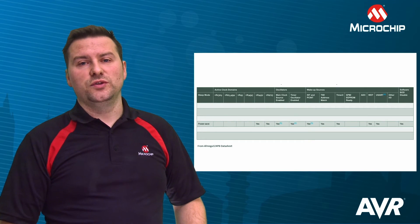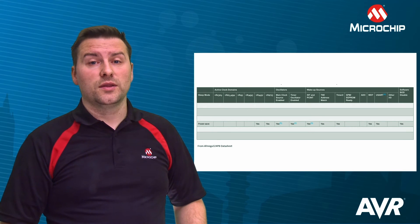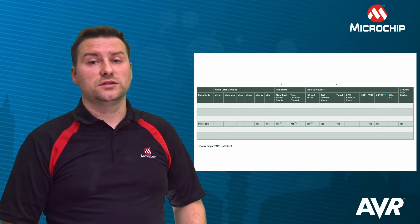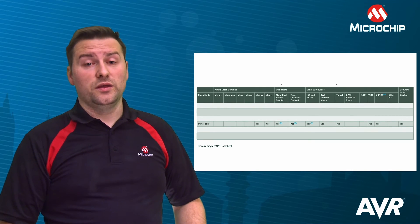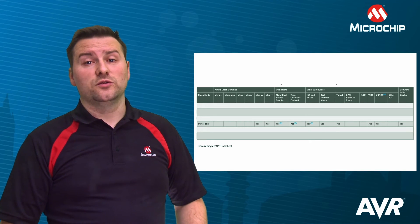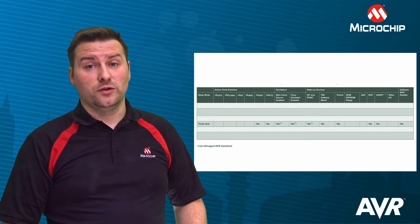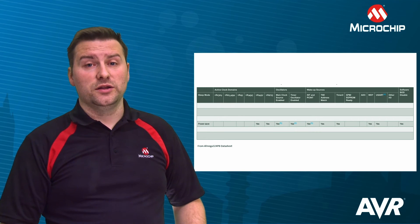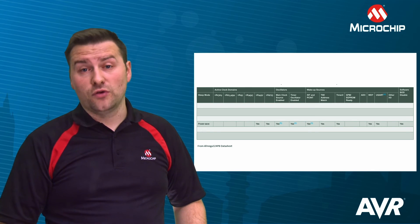Power save mode is similar to power down mode, except that the asynchronous clock is enabled, allowing timer counter 2 to keep running during sleep. This mode is typically used with a real-time clock, which also provides wake-up sources on timer overflow or output compare. If timer counter 2 is not used, power down mode is recommended instead, as other components may be active and draw more current.